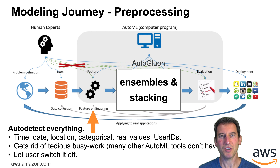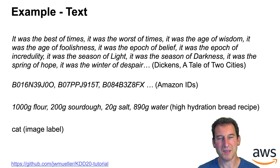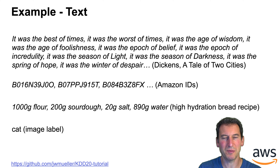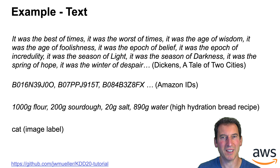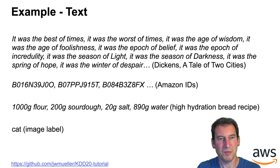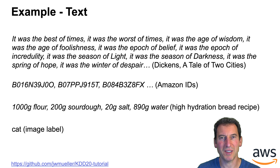Of course there is no guarantee that these defaults are any good, so you need to let the user switch things off if they know what needs to be done. Let me give an example: consider text. The top paragraph might be text from a novel by Dixon. But there might also be Amazon product IDs, or a list of weights and items like flour and sourdough for making bread, or your text might just be the label for an image — that it's a cat. All of those need to be treated rather differently, and if you don't, you're going to get rather poor outcomes.